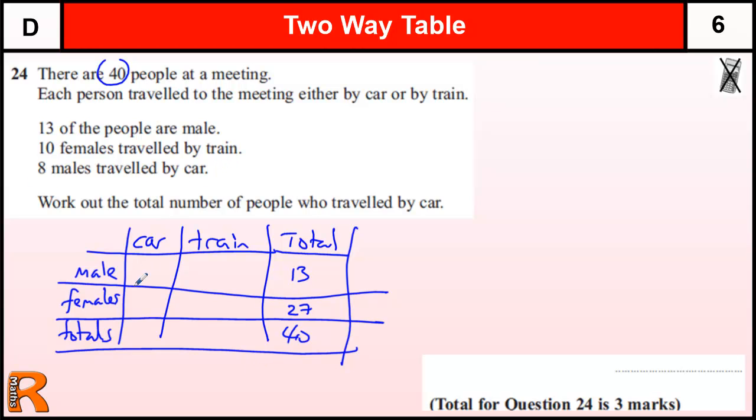10 females travel by train. So 10 females travel by train. And that tells us that there must be 17 females that travel by car.